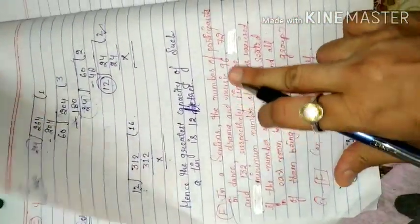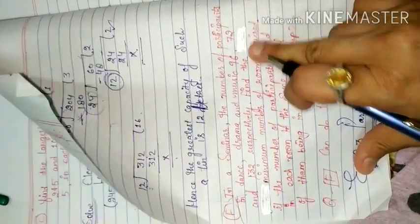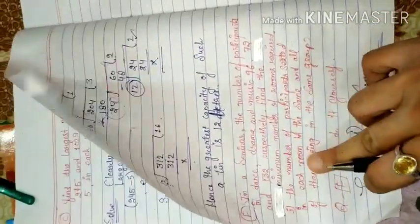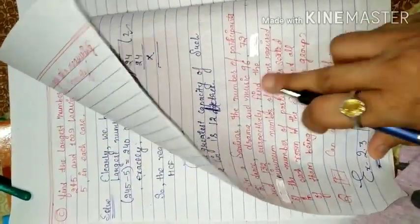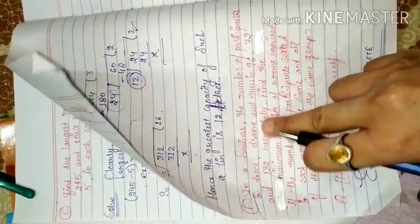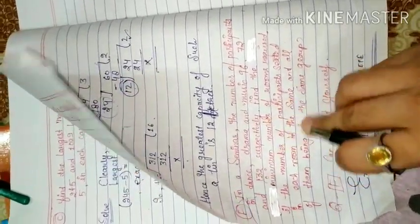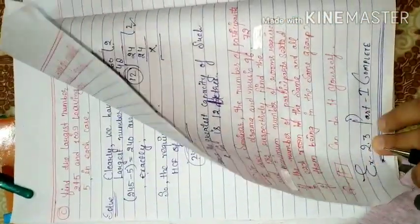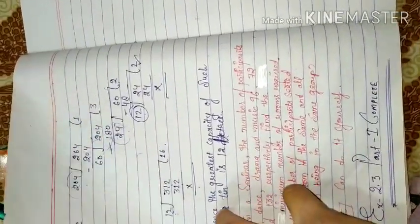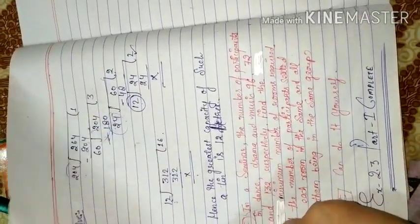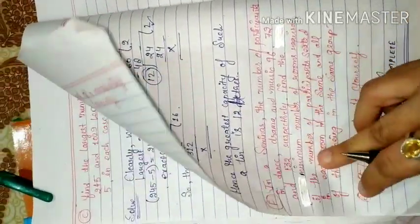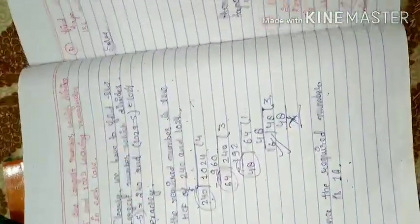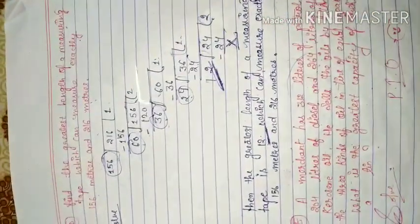In a seminar, the number of participants in dance, drama, and music is 96, 72, and 132 respectively. Find the minimum number of rooms required if the number of participants seated in each room is the same and all of them are being in the same activity. We are choosing something. What do we need to do? Like I have done this question, question number 1, you have to do this. Exercise 2.3 part 1 is complete. I will provide you part 2 next day. If you don't understand, please pause the video. All questions will be like this. Thank you.